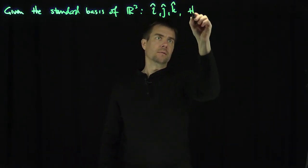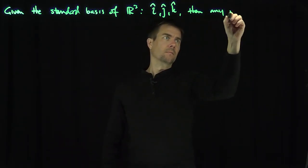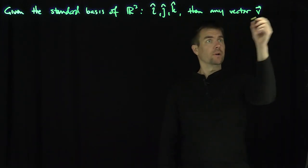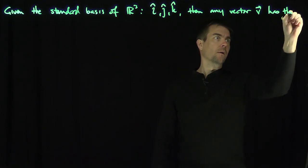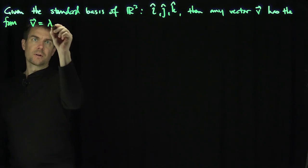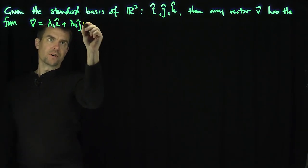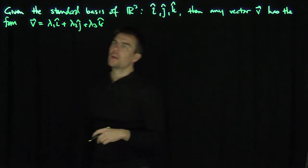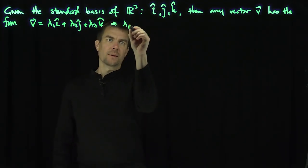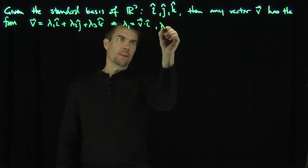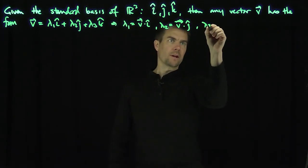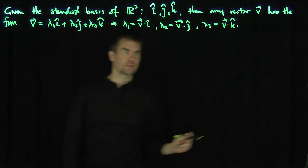Then we can expand any vector. V can be decomposed or expressed in terms of these vectors. It has the form V = λ₁i-hat + λ₂j-hat + λ₃k-hat. Of course, we can find what these things are in terms of the dot product. In other words, λ₁ = v·i-hat, λ₂ = v·j-hat, and λ₃ = v·k-hat, because there is an orthogonal basis.